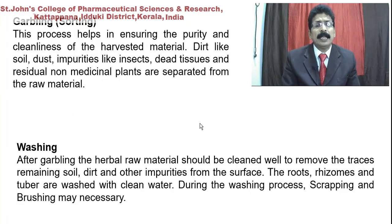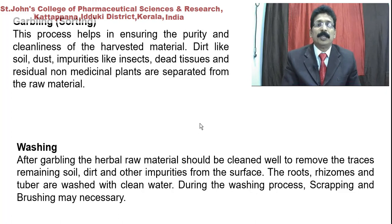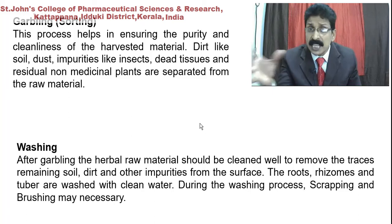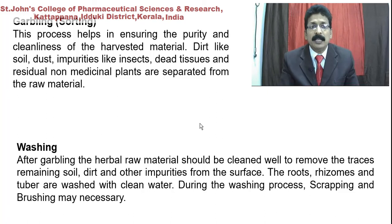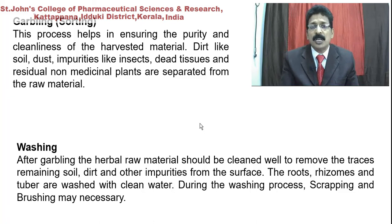Garbling, or sorting out, is the first primary process. This process helps to ensure the purity and cleanliness of the harvested or collected material. Dirt like soil, dust, and impurities like insects, dead tissues, and residual non-medicinal plants are separated from the raw materials.